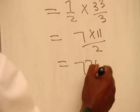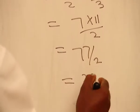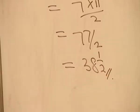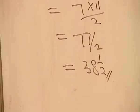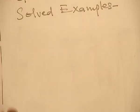That is 77 over 2, which gives you 38 and a half as the sum of the first 5 terms of the geometric progression. Example 4.